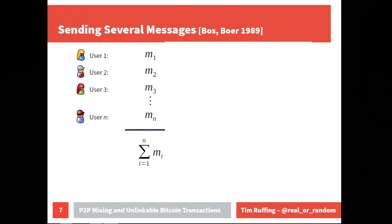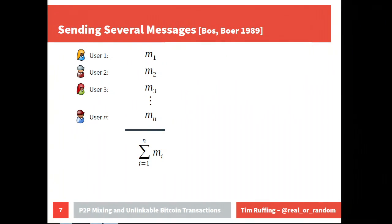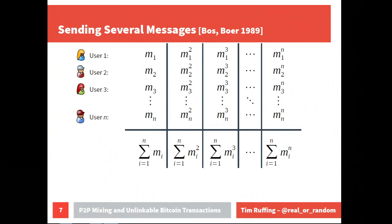To extend this to the real world, instead of bits we work in a larger finite field and encode messages as numbers. In P2P mixing we don't want just the sum — we want the list of messages. So we run n parallel versions of the protocol: in slot 1 we compute the sum of messages, in slot 2 users send messages squared, in slot 3 messages cubed, and so on up to n.